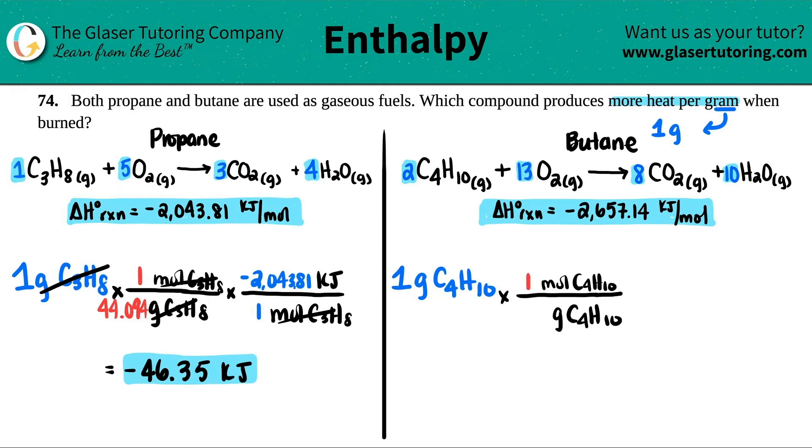We got carbon. So 12.01. 12.01 times 4 plus 10 times 1.008. I get roughly 52. Just kidding. 58.12. Cancel the grams out.